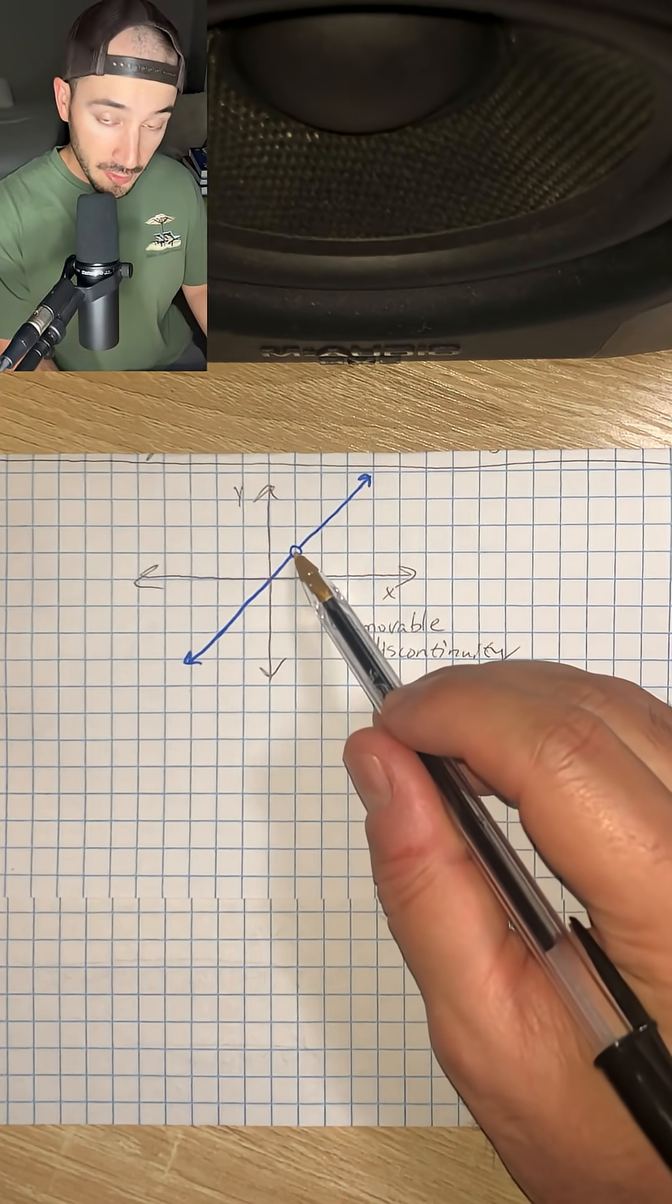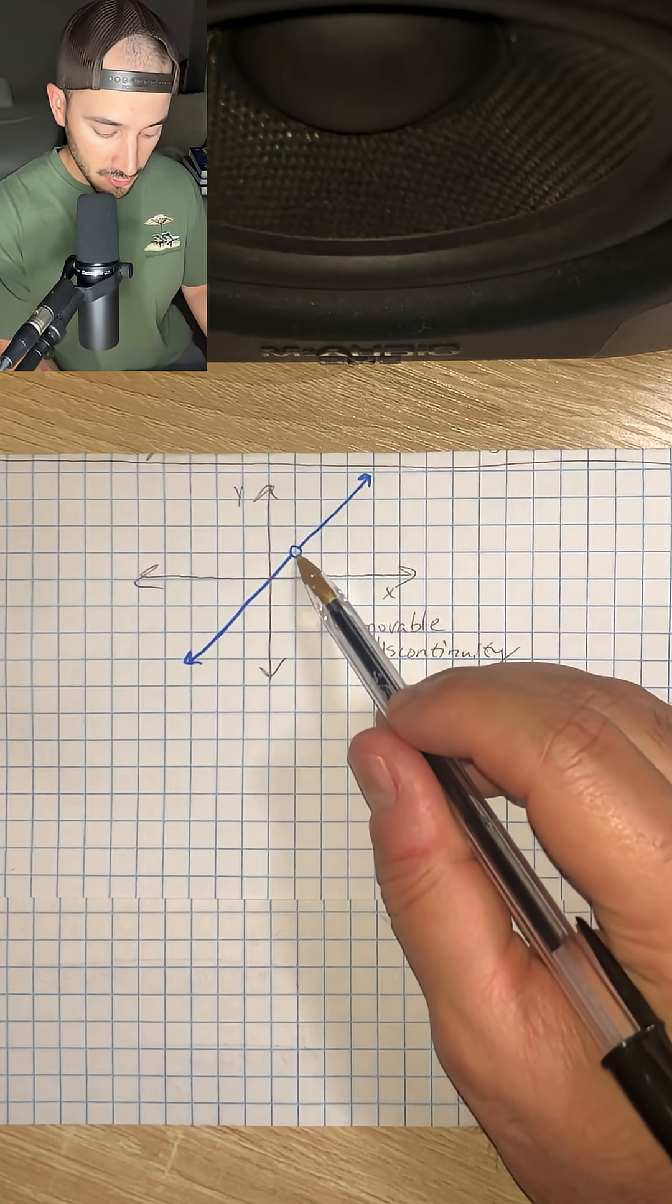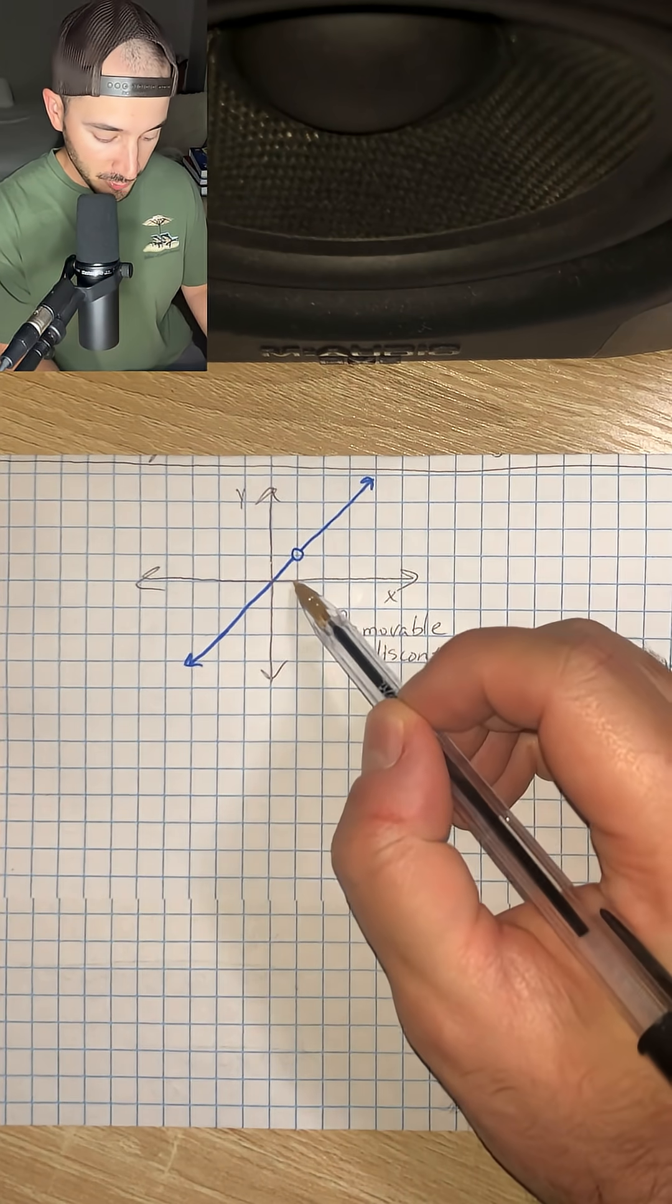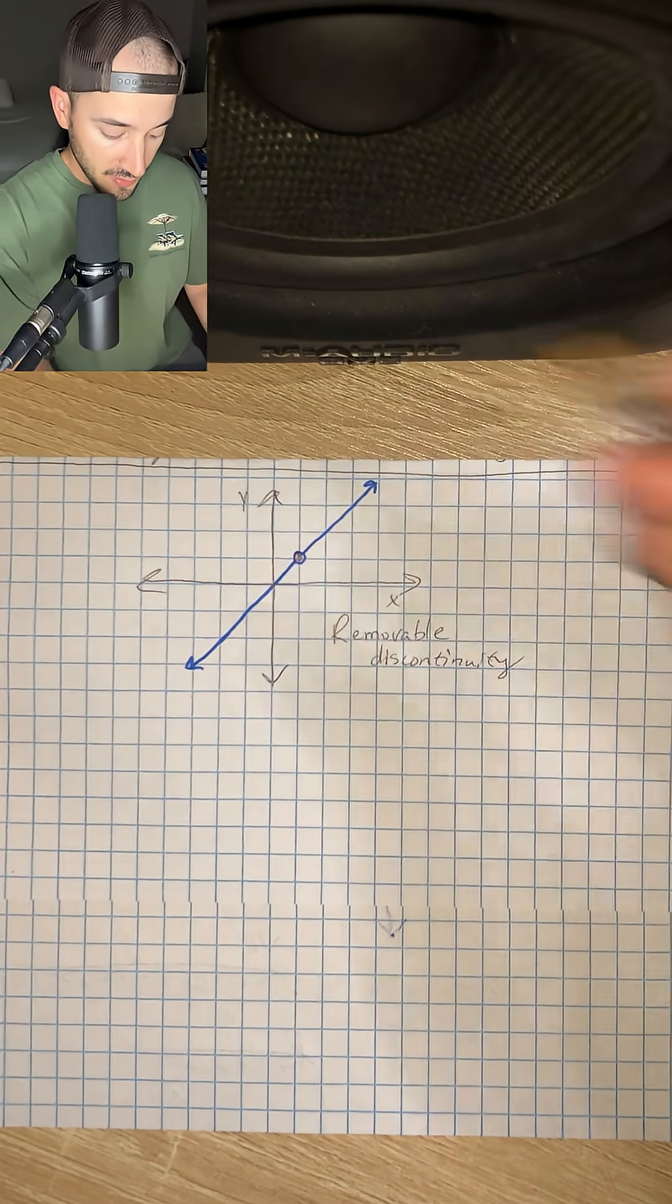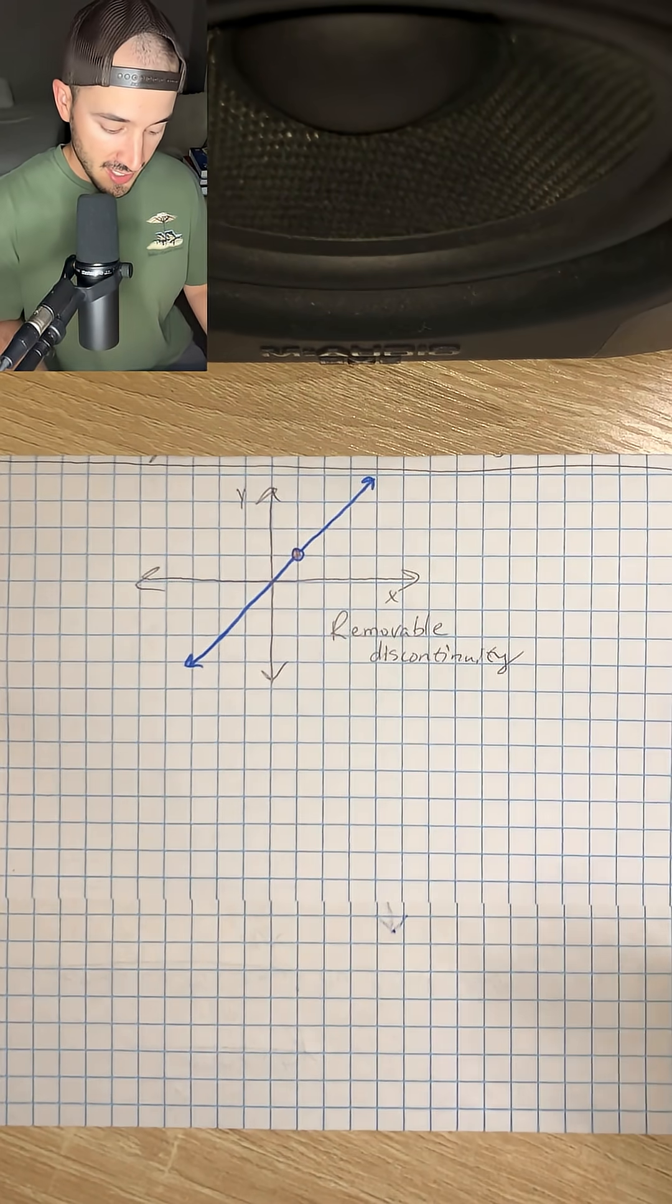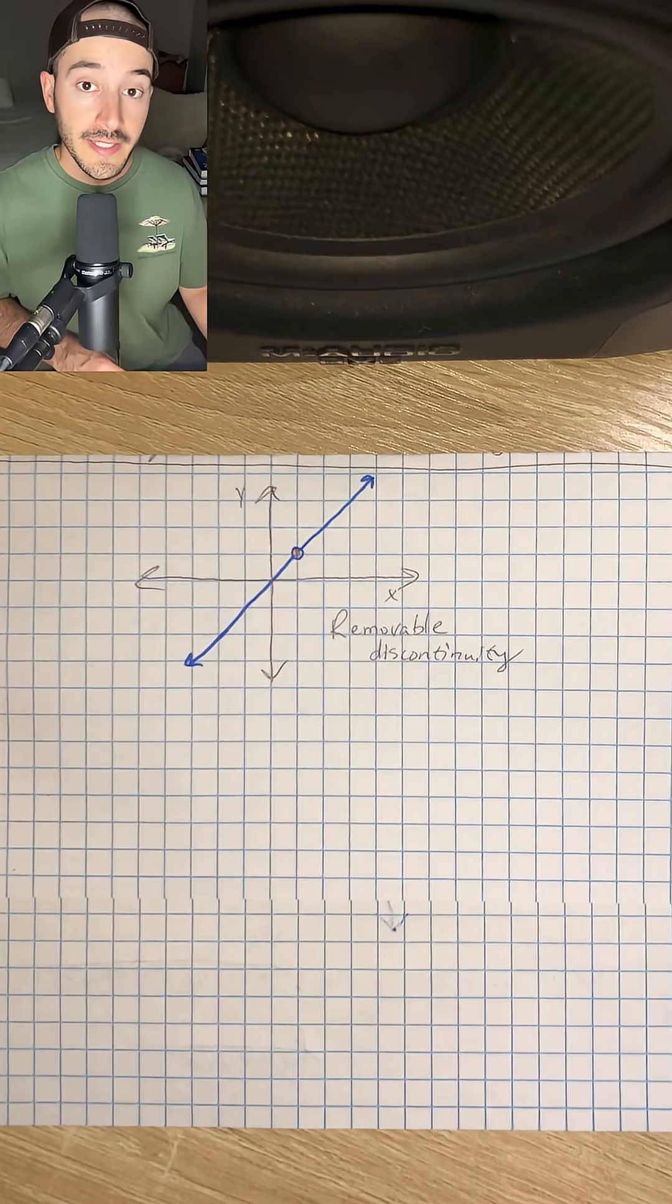Okay, so if we were to fill in that dot, that circle, and make that a point so that at x equals one, we had a y value of one as well. So if we did that, that would be a continuous function now. So that would be a removable discontinuity.